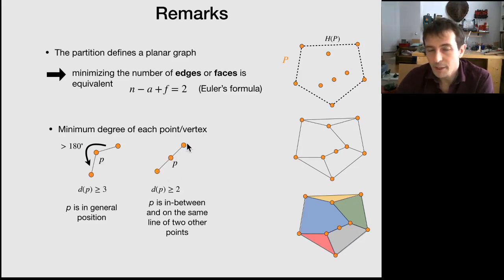And when P is on the same line than two other points and in between, well, you can manage a degree of 2. So this gives you a lower bound on the degree.